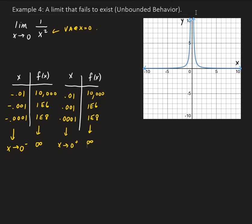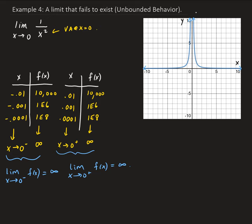So this is another way that the limit may fail to exist. As x approaches 0 from both sides, the limit is approaching infinity. The limit as x approaches 0 from the left of our function is going to infinity, and the limit as x approaches 0 from the right side is also approaching infinity. So this limit is not approaching a finite value — it's approaching infinity. Therefore, this limit doesn't exist. We can say that the overall limit is going to approach infinity.